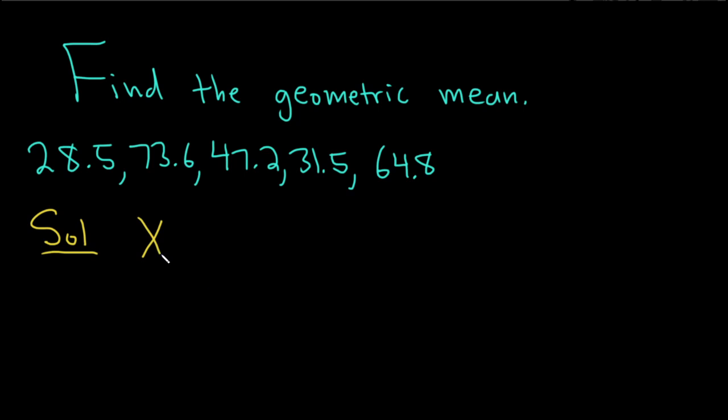So in general, if you have, say, n numbers, which we'll call x1 through xn, the geometric mean is given by this formula. It's the nth root, so it's the total number of numbers. That's the root we use. And then we just multiply these. We take the product.